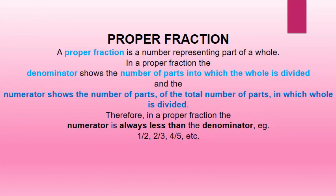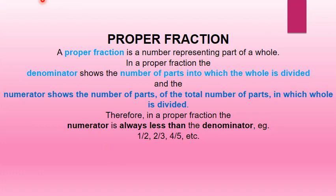Proper fraction. A proper fraction is a number representing part of a whole. The denominator shows the number of parts into which the whole is divided, and the numerator shows the number of those parts taken. Therefore, in a proper fraction, the numerator is always less than the denominator. For example, in 1 upon 2, the numerator 1 is less than denominator 2. Similarly, 2 upon 3 and 4 upon 5 are proper fractions.